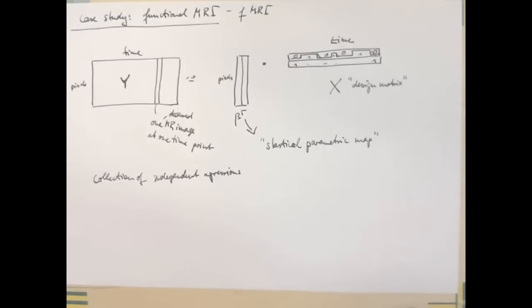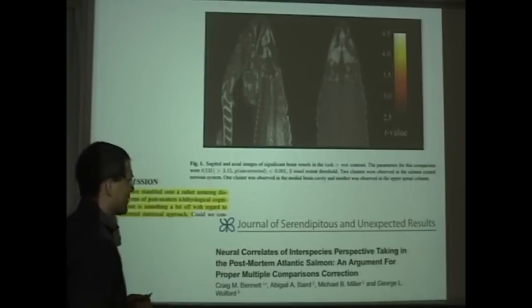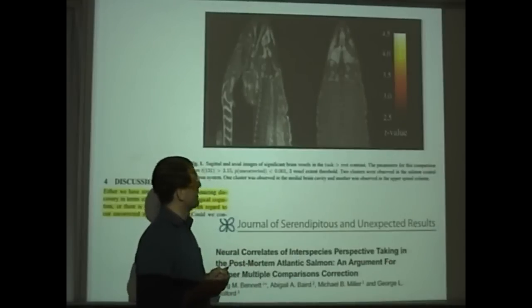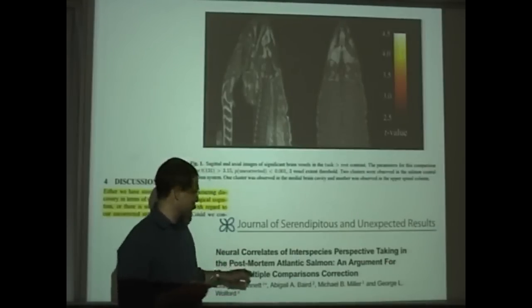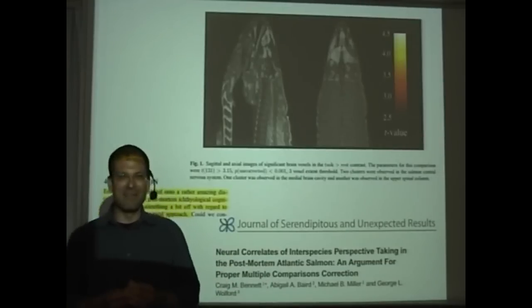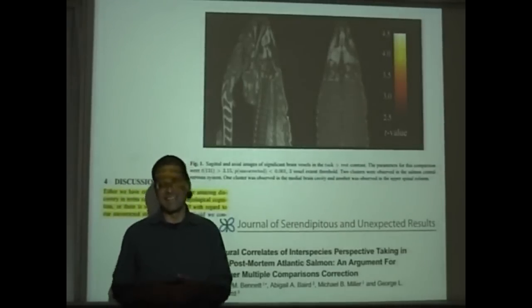Now if you do that, you can for example find activations like this. So if you look closely there is an activation here and there is an activation and there is a feeble activation there. We're looking at the brain of a fish, a fish that was shown images of humans doing different things. And interestingly, you know, it was a post-mortem Atlantic salmon. Actually this fish was dead.